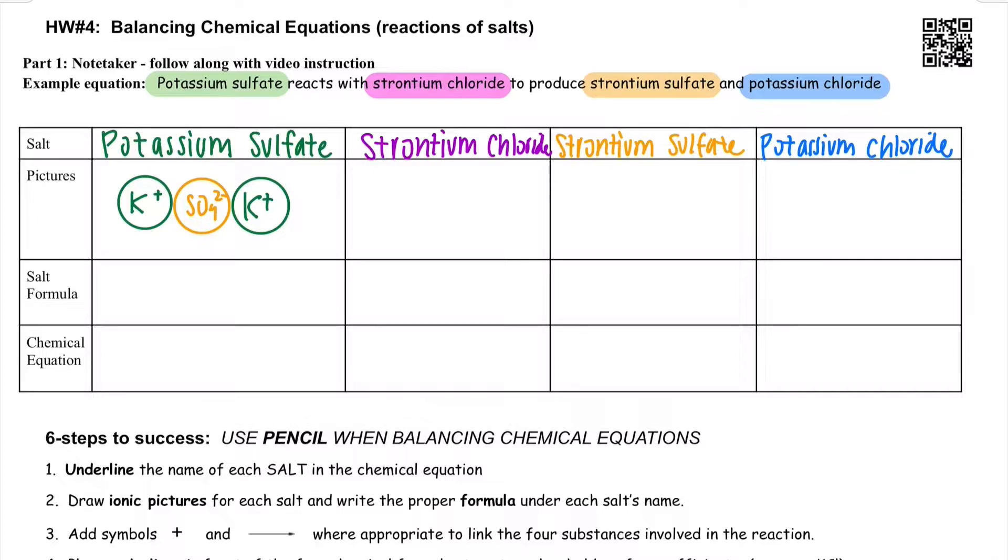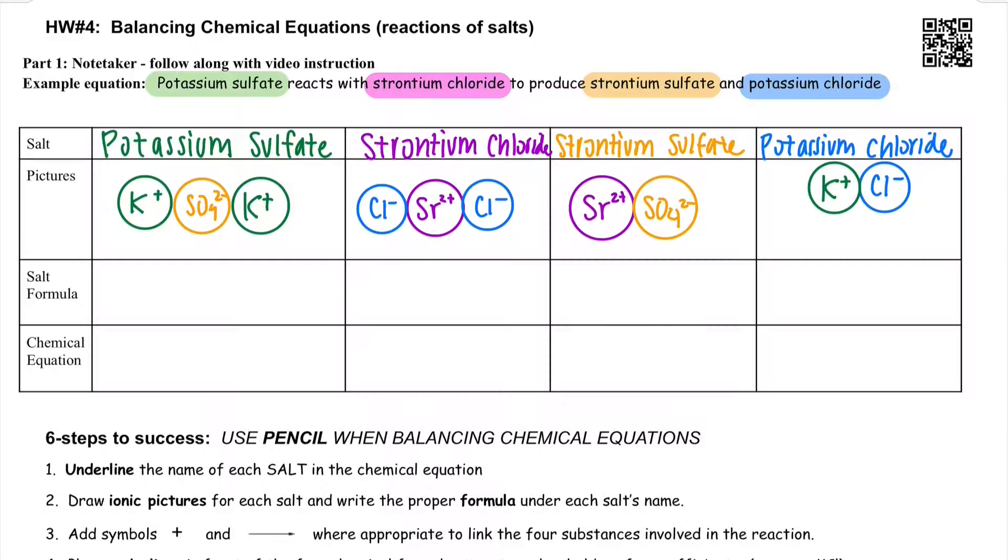Take a minute here to pause the video and you fill in the salt pictures for the rest of the salts and then I'll put the answers up and you can check. Alright, here are the salts. This is what you should have. Strontium chloride has one strontium and two chlorines. Strontium sulfate is a one-to-one and so is potassium chloride based on their charges.